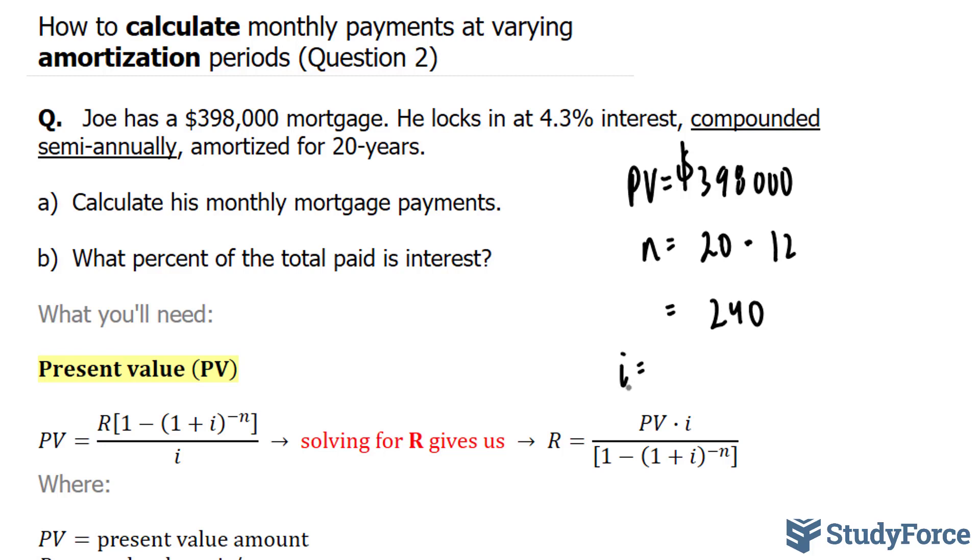i is the tricky variable to find in this case, because you'll notice that he is paying monthly, yet the compounding period is semi-annually. So we have to take into account this discrepancy.